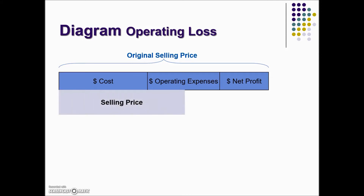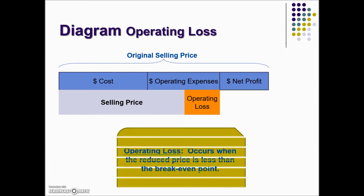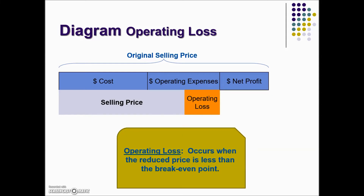When an operating loss occurs, the selling price of an item is below the break-even point but above the cost of the item. To find operating loss, we'll take the break-even point and subtract the reduced selling price from it.